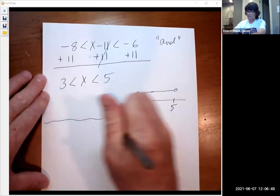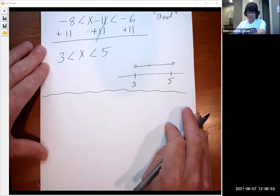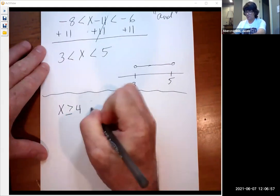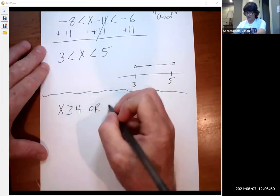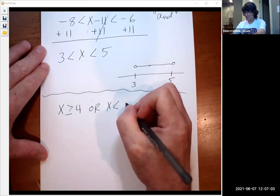The other situation you can have, this is called a compound inequality. Another situation is you could have an or case where you have x is bigger than or equal to 4, or x is less than 2.